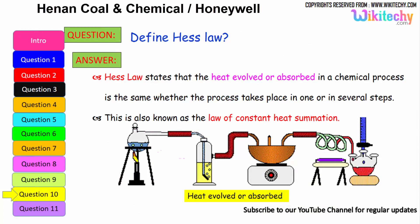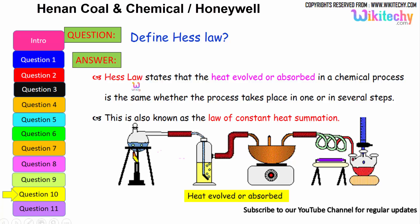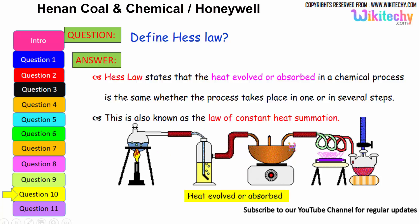Define Hess's Law. This is one of the very important questions. In the case of generating heat between an object and its emissions, Hess's Law states that the heat evolved or absorbed in a chemical process is the same whether the process takes place in one or in several steps. This is also known as the law of constant heat summation.